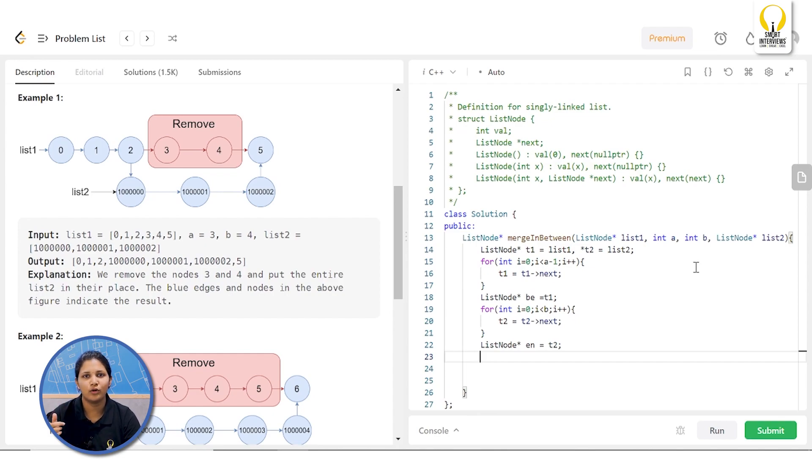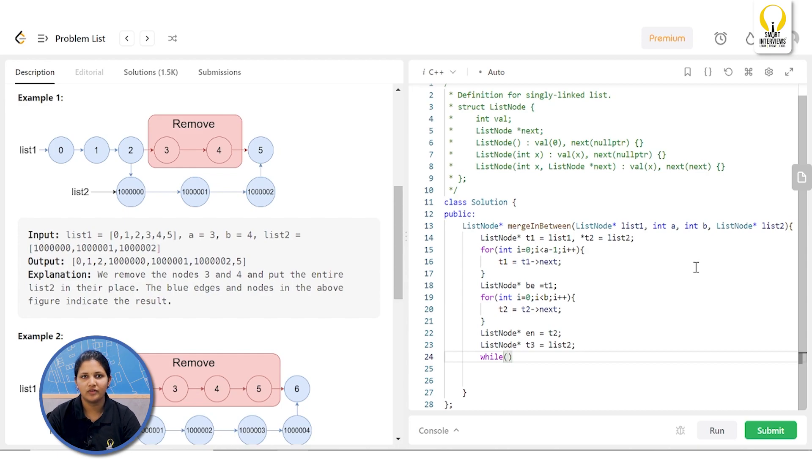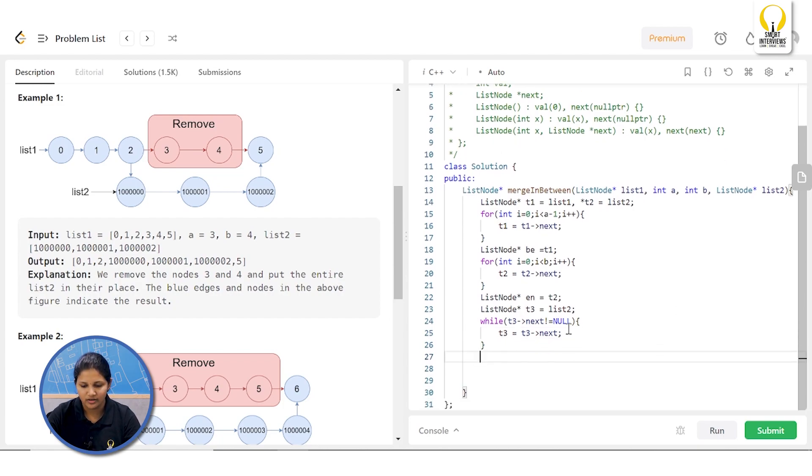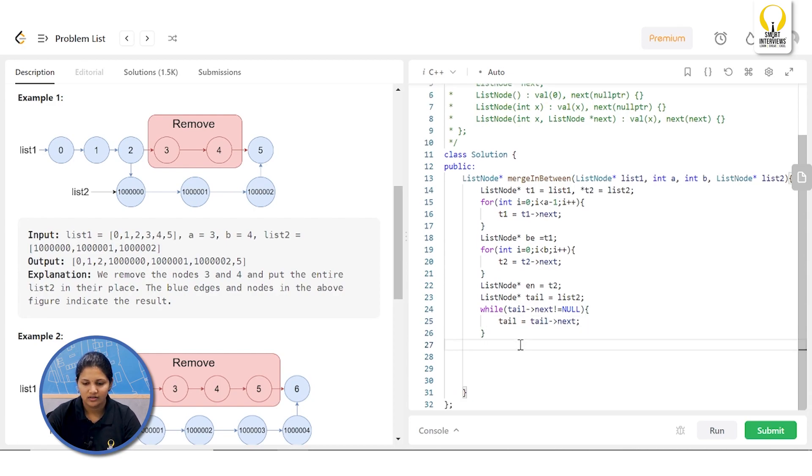What is the next step? Get the tail pointer in list two. How will we get it? Even for that, let me maintain our temporary pointer for list two. Let us name it as T3. Here, you will store your list two. So, until which point will you move now? As we discussed, we have to move till .next is null. So, we'll write the same thing over here. T3.next until this is not equals to null, you keep on moving. T3 equals to T3 next. Now, your T3 is nothing but your tail pointer. Shall we rename it? Maybe we'll write it as tail itself and here as well tail.